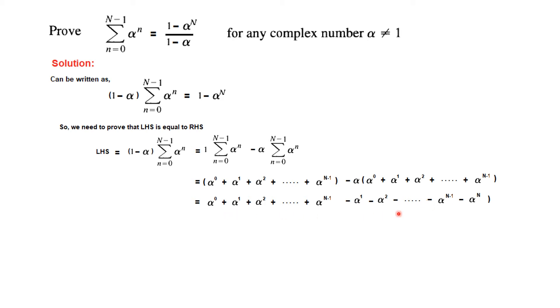Now if you look carefully, you can see that alpha^0 remains there, but alpha^1 cancels with minus alpha^1, alpha^2 cancels with minus alpha^2, and similarly all the terms will cancel, even this one will cancel with this. So what will remain is minus alpha^n.